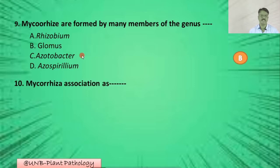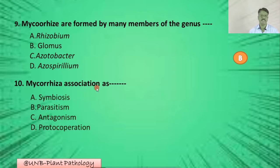Question number ten: Mycorrhizae association is — A: symbiosis; B: parasitism; C: antagonism; D: proto-cooperation. The correct option is A: symbiosis.